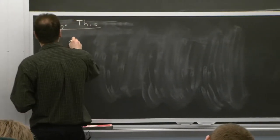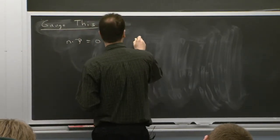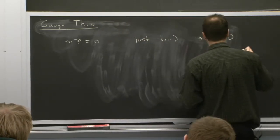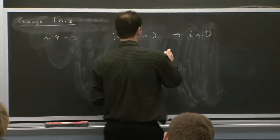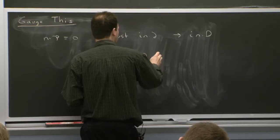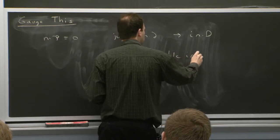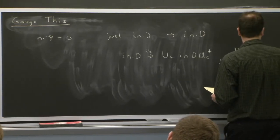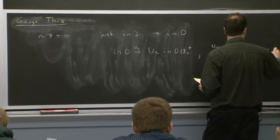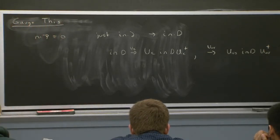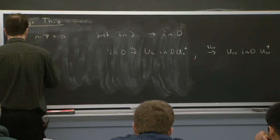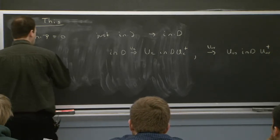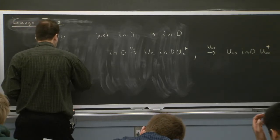N dot label operator is 0, so for that component you just have i n dot partial with no label piece. Gauging it just gives i n dot d, which is the full covariant derivative with both ultra-soft and collinear pieces. Looking at how it transforms under collinear and ultra-soft symmetries, this guy transforms as you'd want a covariant derivative to transform under both types of symmetries, because of the way we set it up as a background field for n dot a ultra-soft.